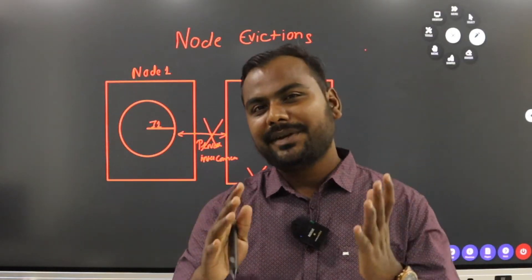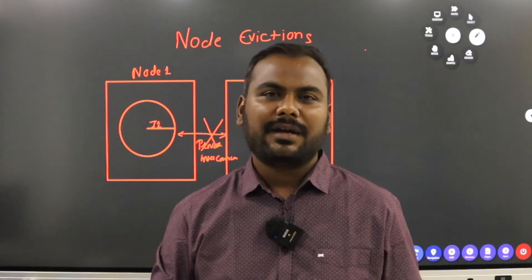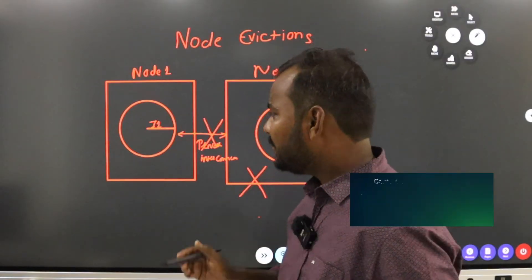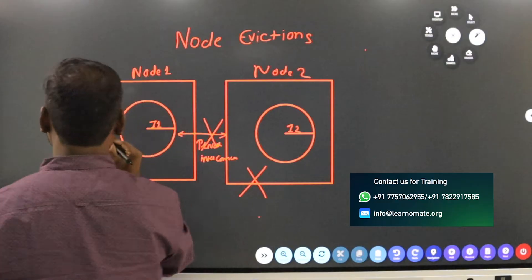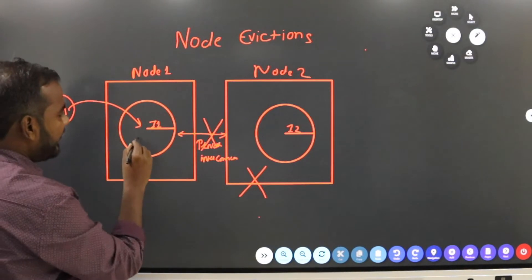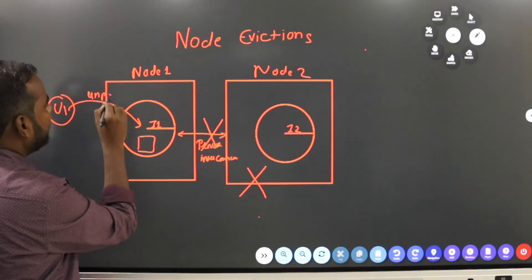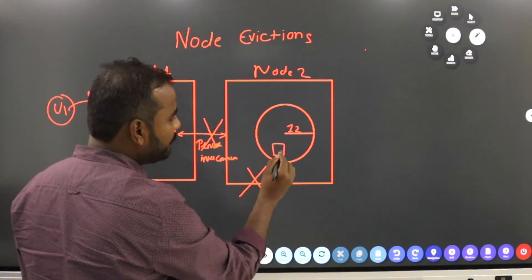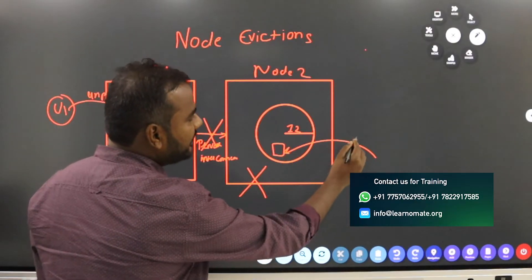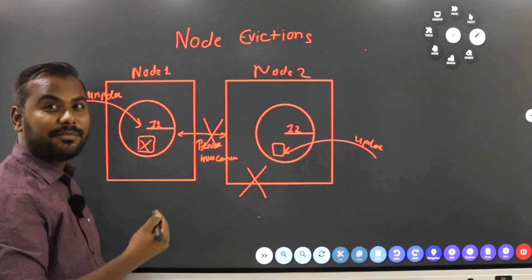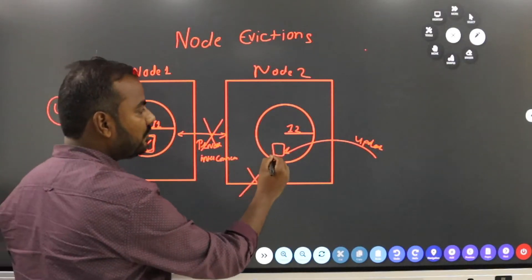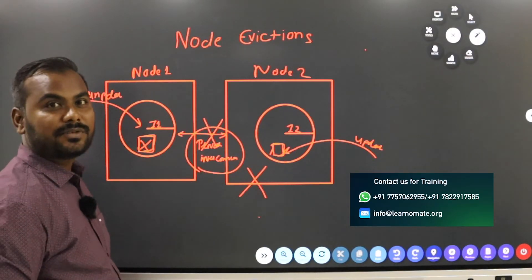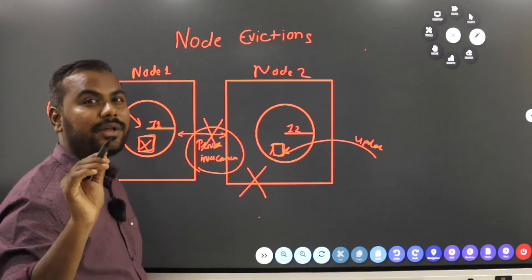Some people wonder whether node eviction is good or not. Node eviction is good — the software is designed this way for the health of your Oracle RAC cluster. Because if both nodes are not communicating, consider this: User 1 connects to instance 1 and modifies a block via an update statement. If that modified block is not known to instance 2, and User 2 is also trying to make an update from instance 2, that is a big problem. Instance 2 should be aware of what is being updated. This communication happens through the private network, so if the private network is not working, it will cause a node eviction in the Oracle RAC environment.